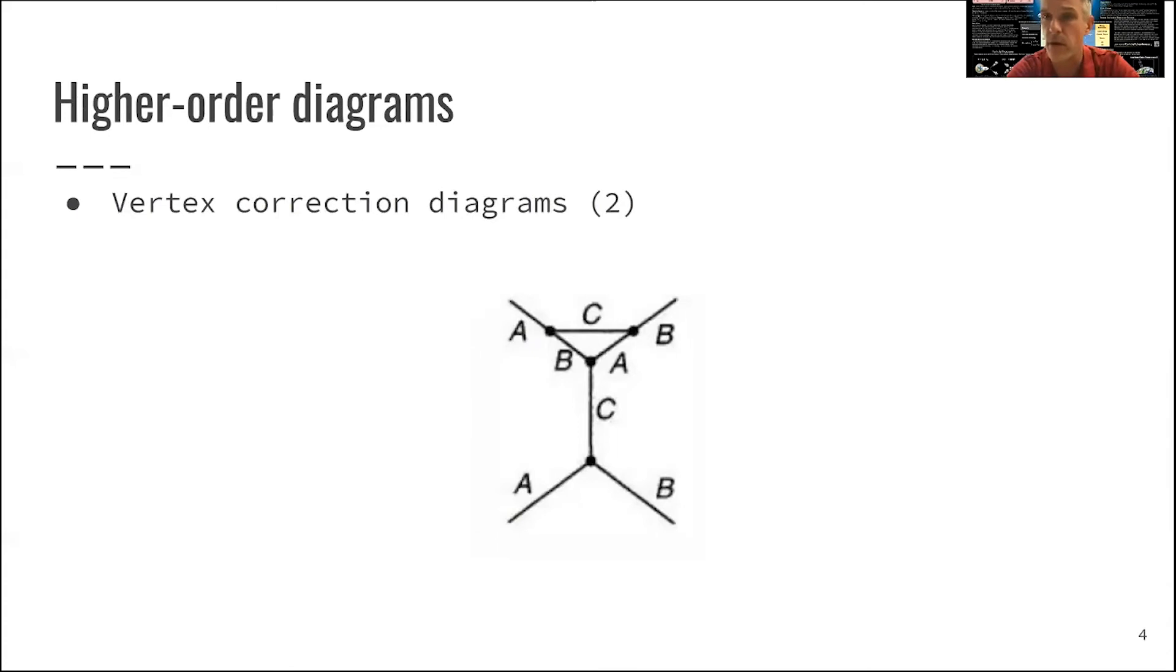The second form of diagrams is one where you correct the vertex involved. So here, there's two diagrams correcting each of the vertices. And so this is shown here. So apparently, this changes then how the vertex actually looks to the outgoing legs.